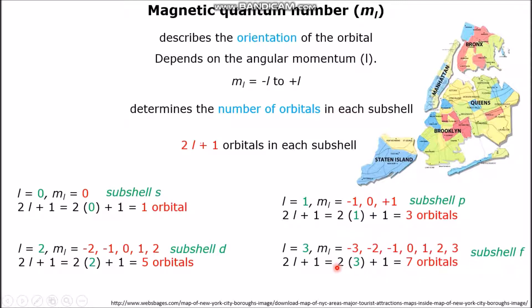For sub-shell F, the L value is 3, and the ML values range from negative 3 all the way to positive 3. There are only 7 orbitals contained within sub-shell F, meaning that electrons can occupy these 7 orbitals and only 7 orbitals. Another quite simple way to determine the number of orbitals is simply by counting the number of ML values.